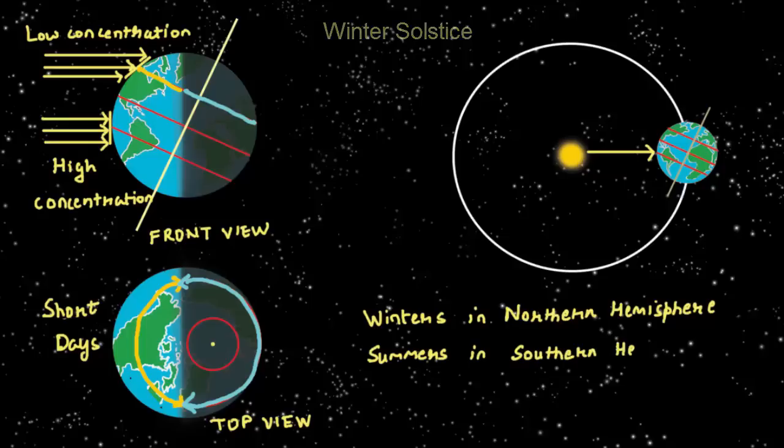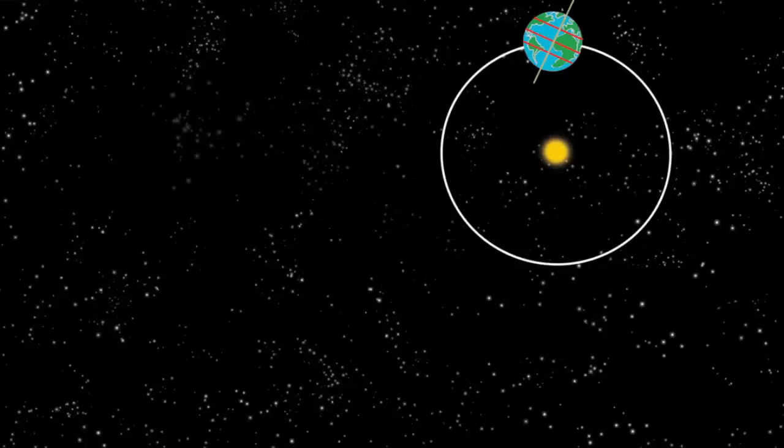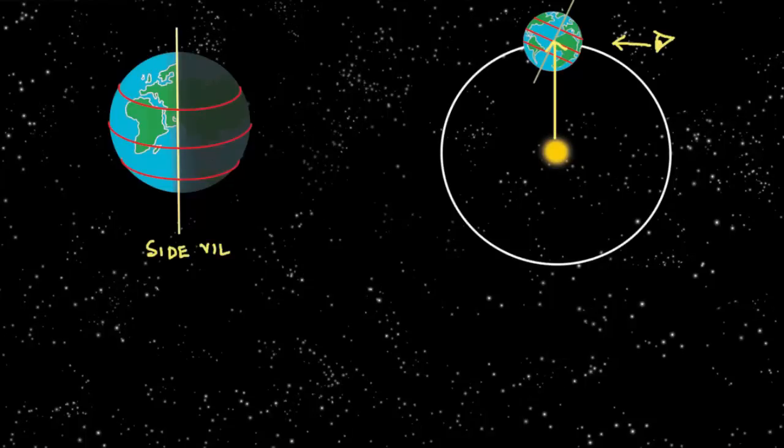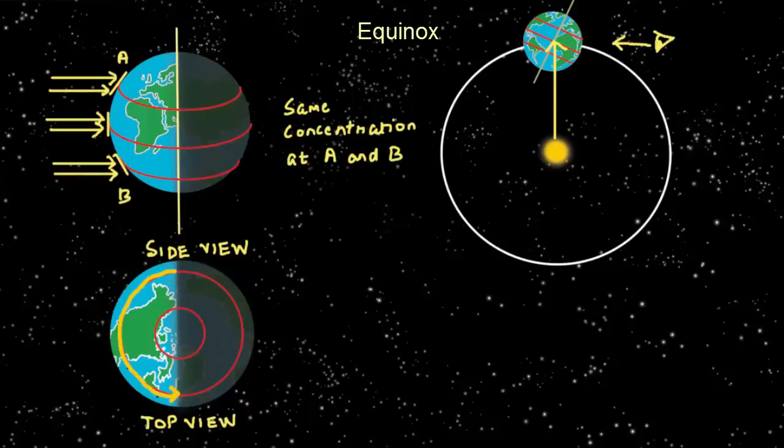Now let's see equinox from a side view. The axis of rotation appears vertical from this view. At the equinox position, the sun's rays are directly overhead the equator, so heat received at the same latitudes, let's say 18 degrees north and south, will be the same. And interestingly, the length of the days and nights for all latitudes will be equal.